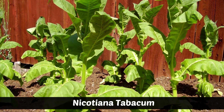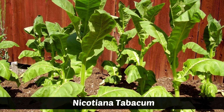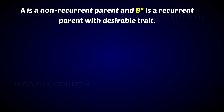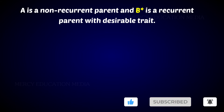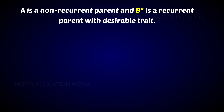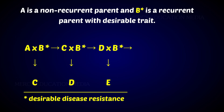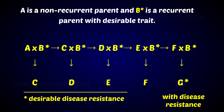Repeated backcrosses are attempted with the parent crop with more desirable characters, and such a crop is known as the recurrent parent. For example, A is the non-recurrent parent and B (with the star denoting desirable disease resistance) is the recurrent parent. A cross B gives C, C cross B gives D, D cross B gives E, E cross B gives F, F cross B gives G. The outcome will have desirable disease resistance.